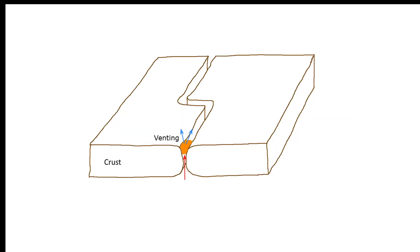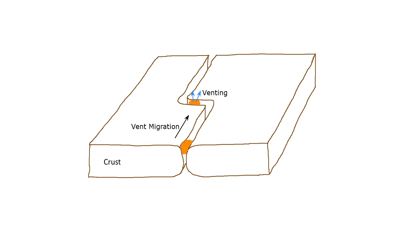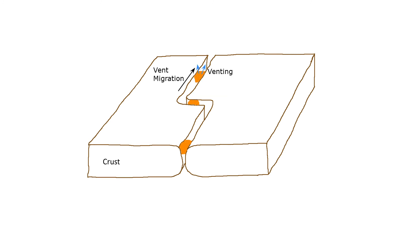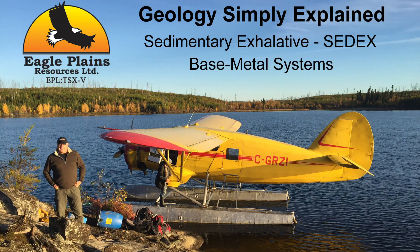In most areas where SEDEX deposits occur, they are often found in clusters. This is due to the vents migrating along these extension faults as the hot spot deep below also migrates. In the case of the Aldridge Basin, only one deposit was ever found — the Sullivan — a behemoth being one of the largest of its kind. It contained well over 40 billion dollars of metal based on recent prices. The search goes on for others of its kind.